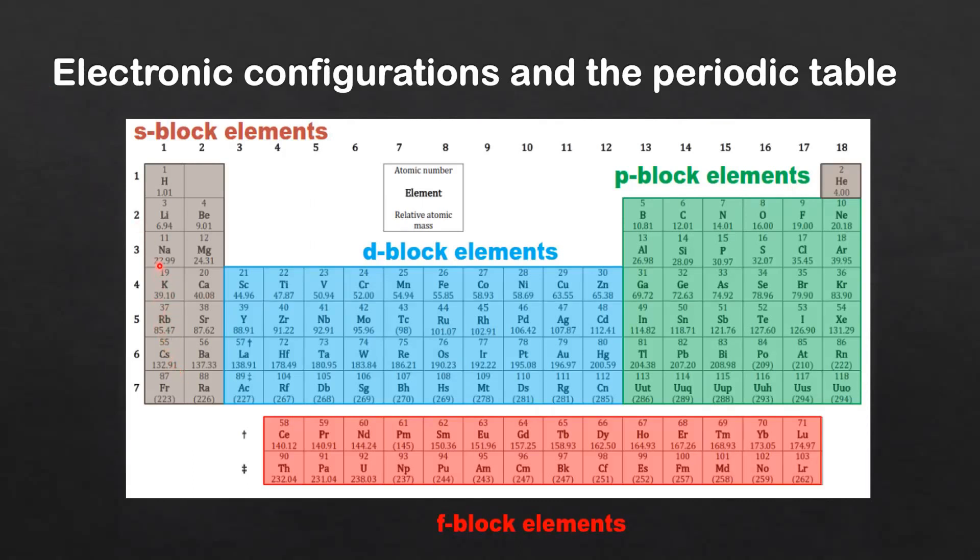Electronic configurations and the periodic table: we can categorize the elements according to which sublevel they have their valence electrons in. For example, groups 1 and 2, and helium, are s-block elements because they have their valence electrons in the s sublevel. Over here we have the p-block elements; they have their valence electrons in the p sublevel.